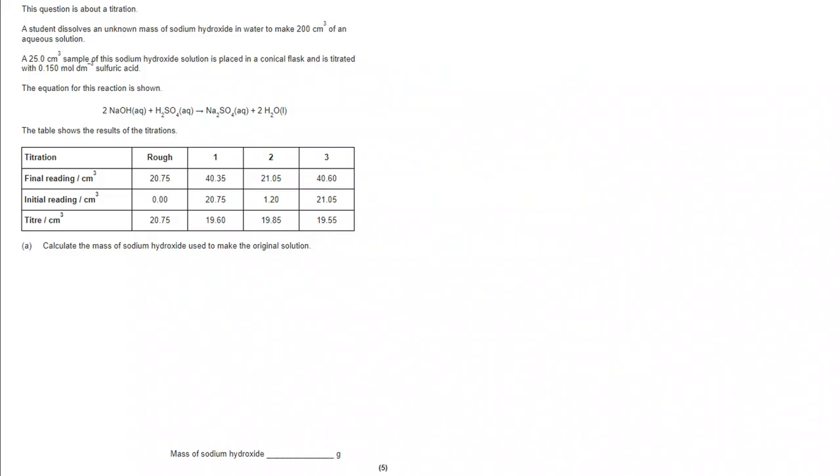We've got a question about titrations. Sodium hydroxide is dissolved to make 200 cm³ of aqueous solution. 25 cm³ of that is taken and titrated against 0.15 molar sulfuric acid. We've got the results of the titrations here. We need to calculate the mass of sodium hydroxide used to make the original solution. Five mark calculation here, lots to think about.